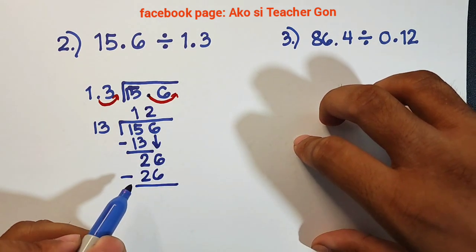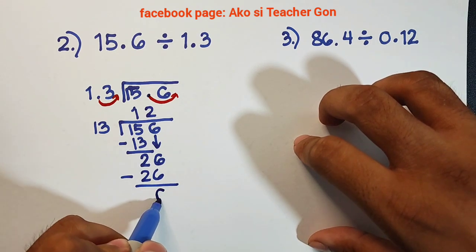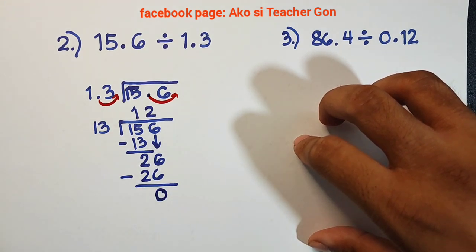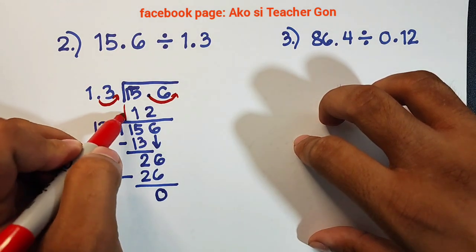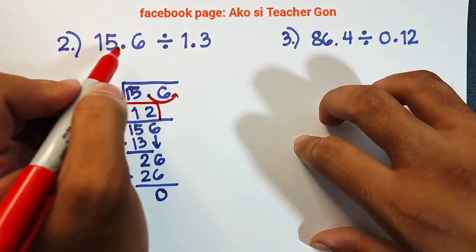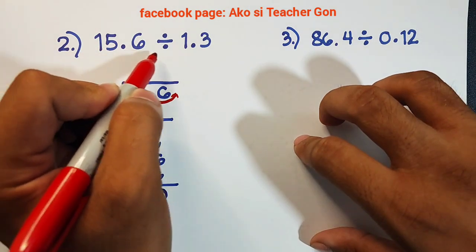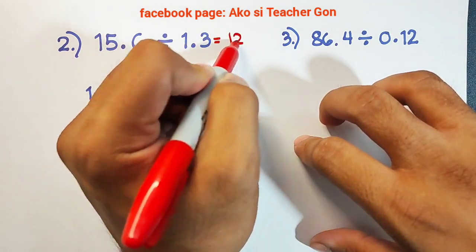As you can see, when you subtract 26 by 26, your remainder is 0. Therefore, the quotient is simply equal to 12. Or 15.6 divided by 1.3 is equal to 12.